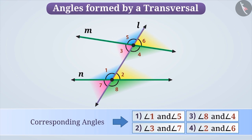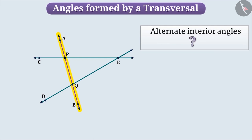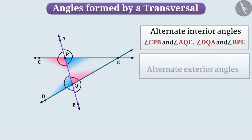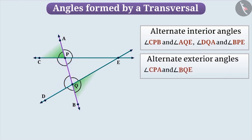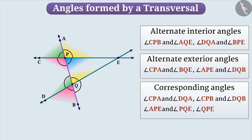Let us consider an interesting example. Here, line AB is intersecting line CE at P and line DE at Q. The transversal forms 8 angles. The pairs of alternate interior angles are angle CPB and angle AQE, and angle DQA and angle BPE. The pairs of alternate exterior angles are angle CPA and angle BQE, and angle APE and angle DQB. The pairs of corresponding angles are angle CPA and angle DQA, angle CPB and angle DQB, angle APE and angle AQE, and angle BPE and angle BQE.